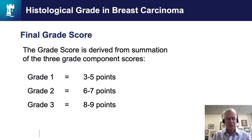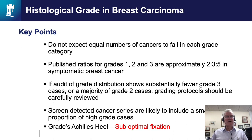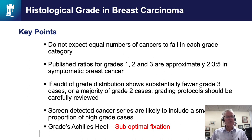Once each grade component has been scored one to three, those scores are summated to give the final grade. A summated score of three to five points denotes grade one, six and seven points grade two, and eight and nine points denotes grade three. Do not expect equal numbers of cancers to fall into each grade category — the approximate distribution is 20% grade one, 30% grade two, and 50% grade three in symptomatic breast cancer. If you audit your grade distribution and see substantially fewer grade three cancers with a majority of grade two, that probably means grading protocols are not being applied accurately or there is suboptimal fixation, leading to a downshift from grade three to grade two.